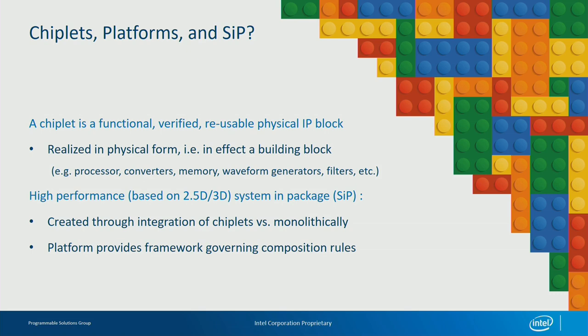So what is a chiplet? A chiplet is a functional, verified, and reusable physical IP block realized in physical form — like a Lego block. It could be a processor, a converter, memory, or anything. With either 2.5D or 3D system-in-package technology, you can now assemble high-performance systems just like Lego blocks, assembling chiplets together versus building a dedicated monolithic die. The platform needs simple governing rules so that connectivity is defined and you don't have a round peg going into a square hole.